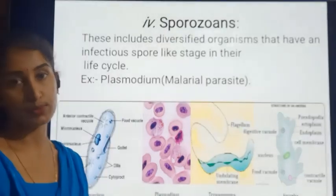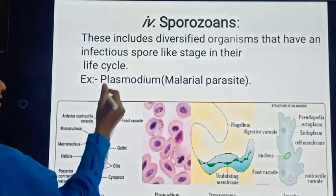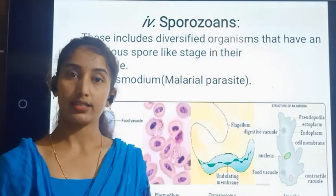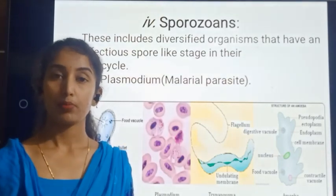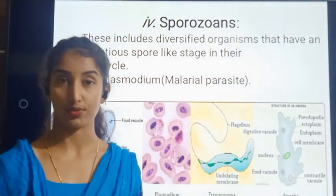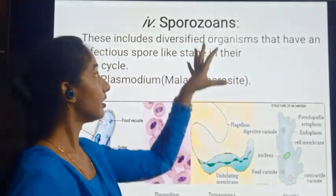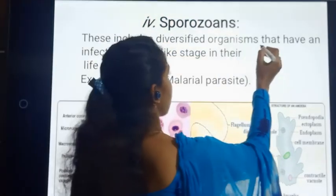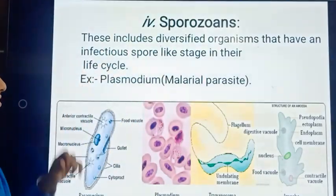The fourth type of protozoan is Sporozoans. This includes diversified organisms. While ciliated, flagellated, and amoeboid protozoans were found in limited numbers, under sporozoans we find diversity in organisms that have an infectious spore-like stage in their life cycle.